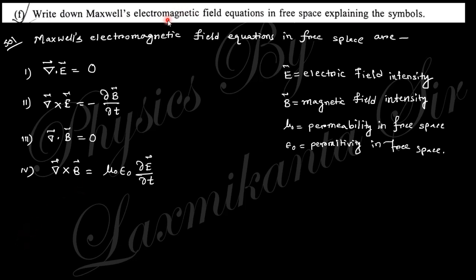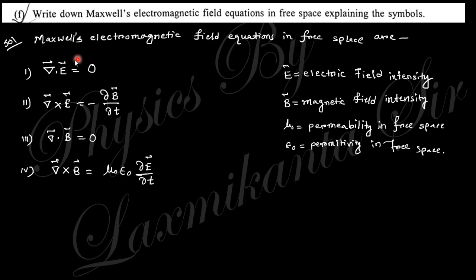The next question says: write down Maxwell's electromagnetic field equations in free space, explaining each symbol. The Maxwell equations in free space are: ∇·E = 0, ∇×E = −∂B/∂t, ∇·B = 0, ∇×B = μ₀ε₀ ∂E/∂t. Here E is the electric field, B is the magnetic field, μ₀ is the permeability of free space, and ε₀ is the permittivity of free space. In free space there is no charge, hence these simplified forms.